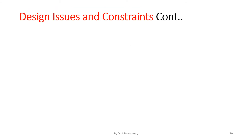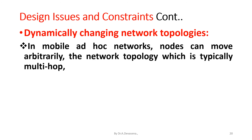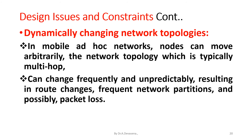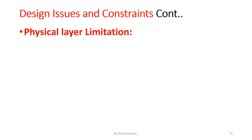The second constraint is dynamically changing network topologies. In Mobile Ad Hoc Networks, nodes can move arbitrarily. The network topology, which is typically multi-hop, can change frequently and unpredictably, resulting in route changes, frequent network partitions, and possibly packet loss.